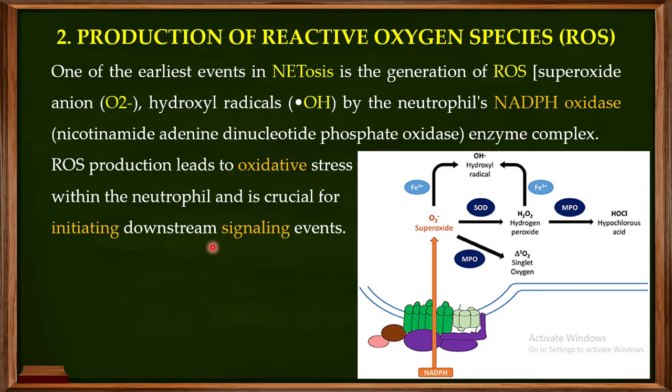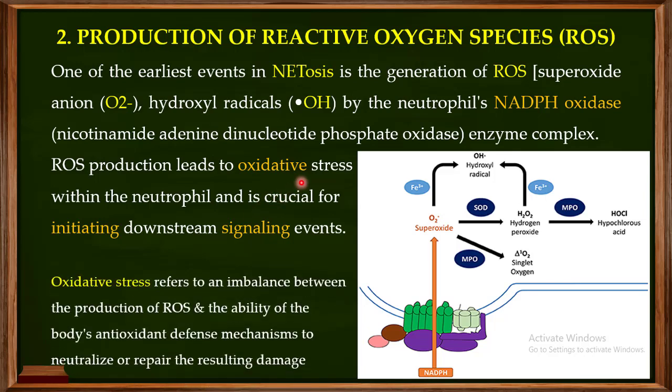Oxidative stress refers to an imbalance between the production of reactive oxygen species and the ability of the body's antioxidant defense mechanisms to neutralize or repair the resulting damage. Reactive oxygen species are produced normally during metabolic processes, but antioxidant defenses neutralize them. Any imbalance — excess ROS relative to the antioxidant defense — leads to oxidative stress. This oxidative stress in neutrophils is crucial for initiating the downstream signaling events of NETosis.